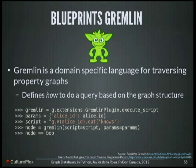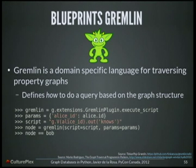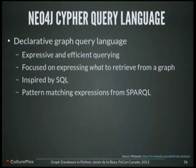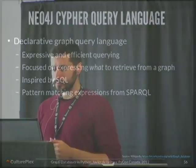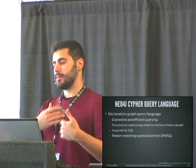So we have Blueprints again. The guys at TinkerPop define Gremlin. Gremlin is a DSL, a domain-specific language, for traversing property graphs. The way it works is by defining how to do a query based on your current graph structure. You can see here an example of Neo4j REST client using the Gremlin plugin to execute a script in Gremlin. In the script you have G, your graph database object, and then you have the ID of Alice, and you want to know all nodes related to Alice using a relationship labeled by 'knows.' It works — you can do almost everything. But Neo4j also defines another language called Cypher. Cypher is a declarative graph query language — it's more expressive, more efficient because it handles all the backtracking for you. It's focused on expressing what to retrieve from a graph, inspired by SQL and pattern matching.